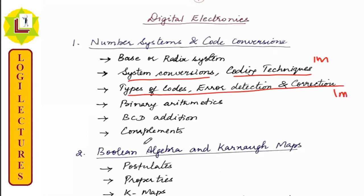Binary arithmetic, BCD addition. These are all used. Complements - this is one mark. This is the first unit, this is the easy unit.